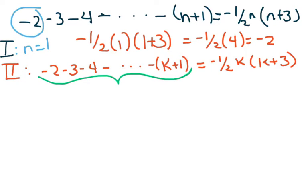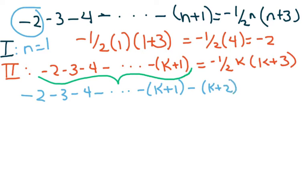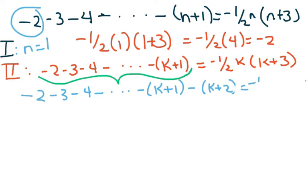We add the (k plus one) term: negative two minus three minus four minus dot dot dot minus (k plus one), and then subtract (k plus two). The right-hand side becomes negative one-half times (k plus one) times (k plus four) — that's what we want it to equal.